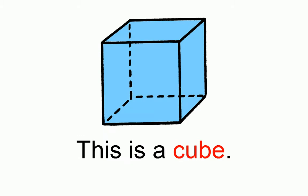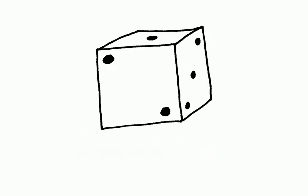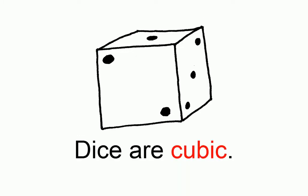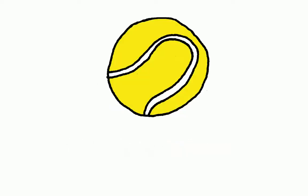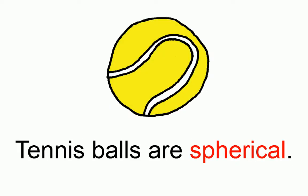This is a cube. Dice are cubic. This is a sphere. Tennis balls are spherical.